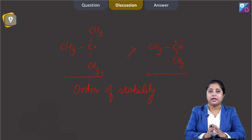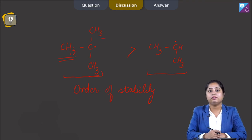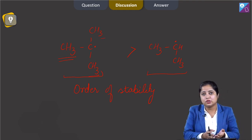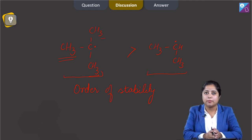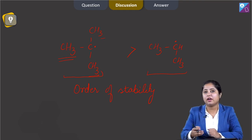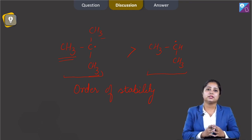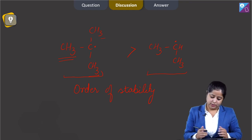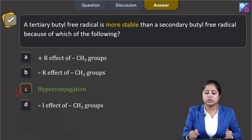The correct reason is that because of the three methyl groups, there will be more hyperconjugative structures. As a result, the stability of the tertiary butyl free radical will be greater. Since we know more alpha hydrogens means more hyperconjugation effect, and therefore more stability. The correct answer is option C: hyperconjugation.